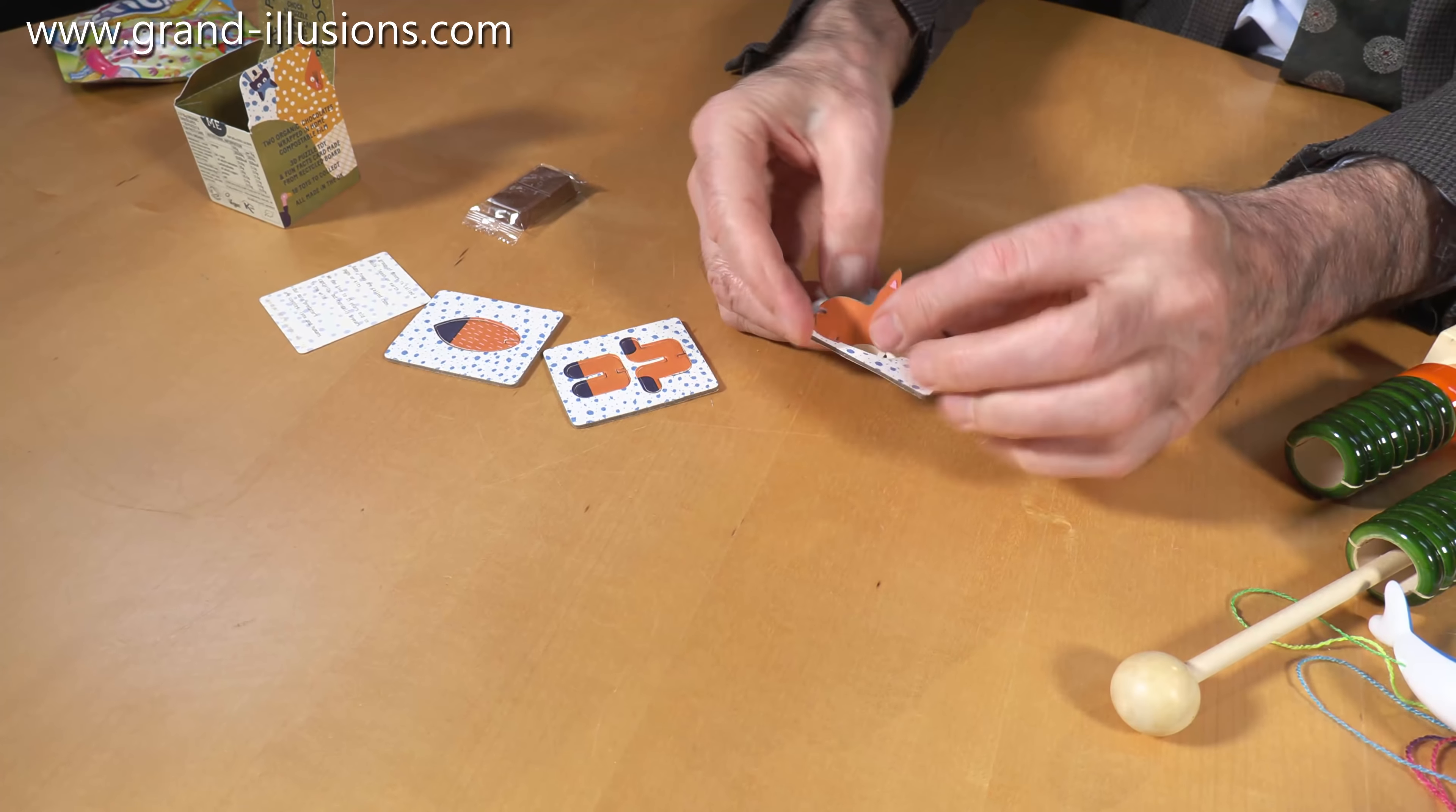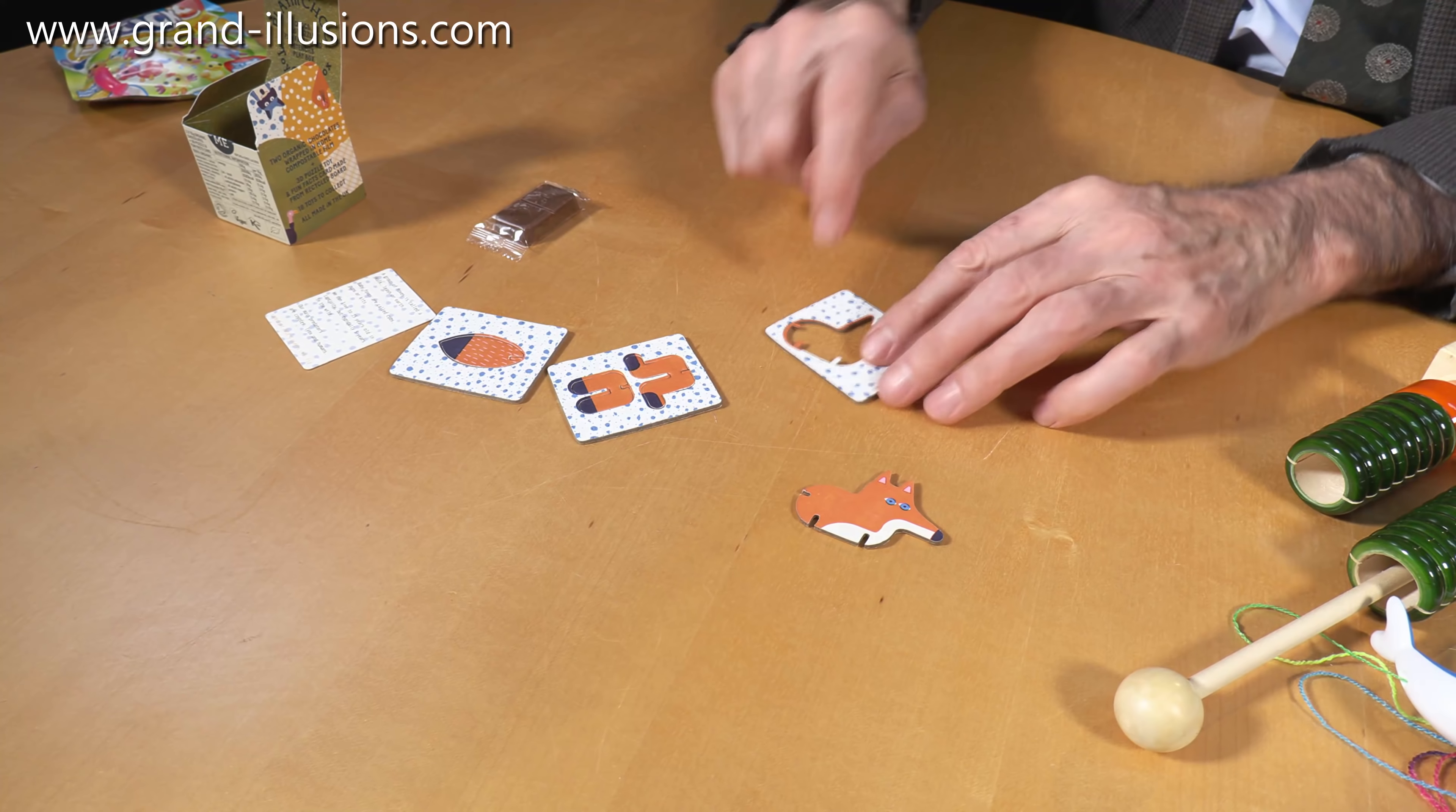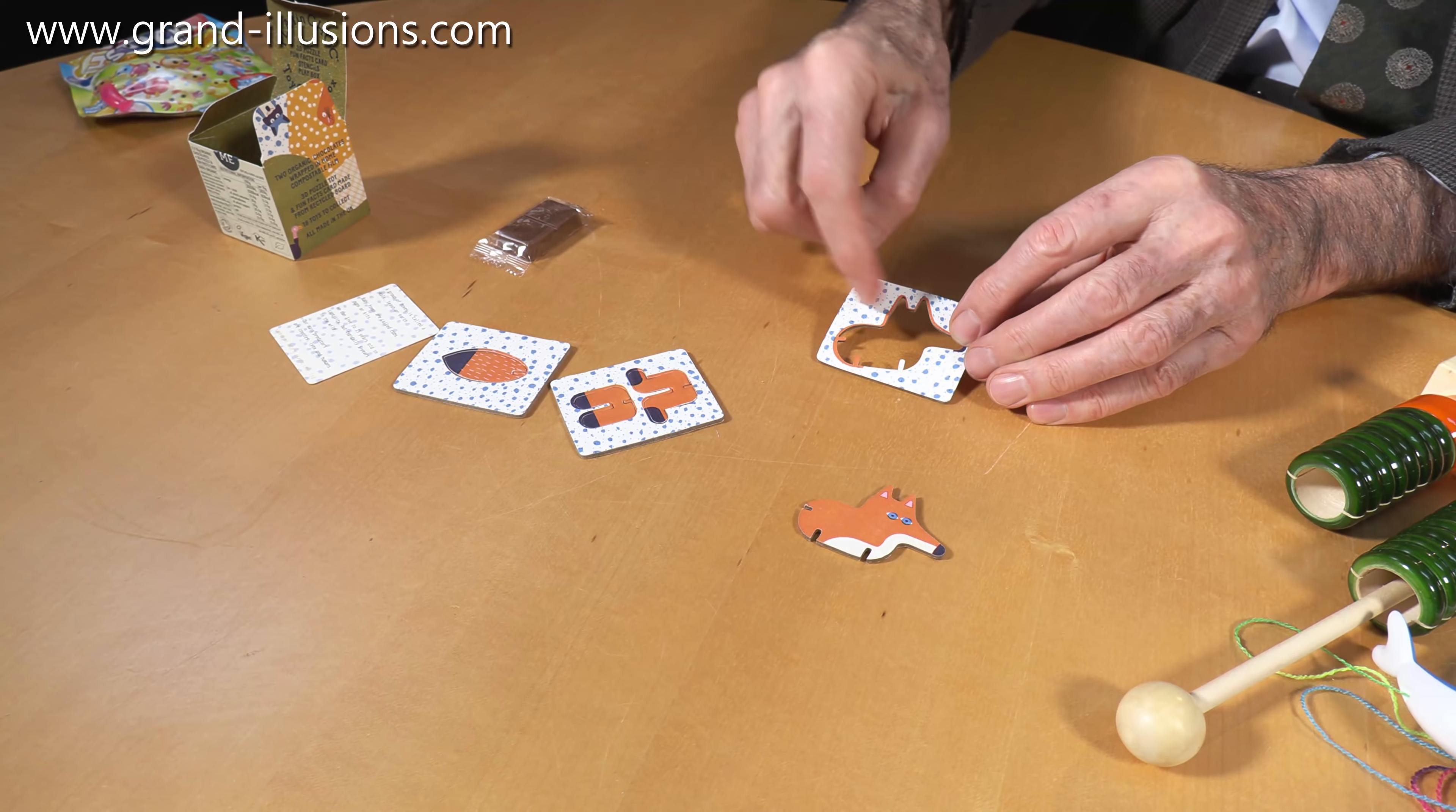To assemble it, it's so easy, you just push it out and it's ready to go. Incidentally, that can be used as a stencil, so the kids can actually do the outline of a fox.